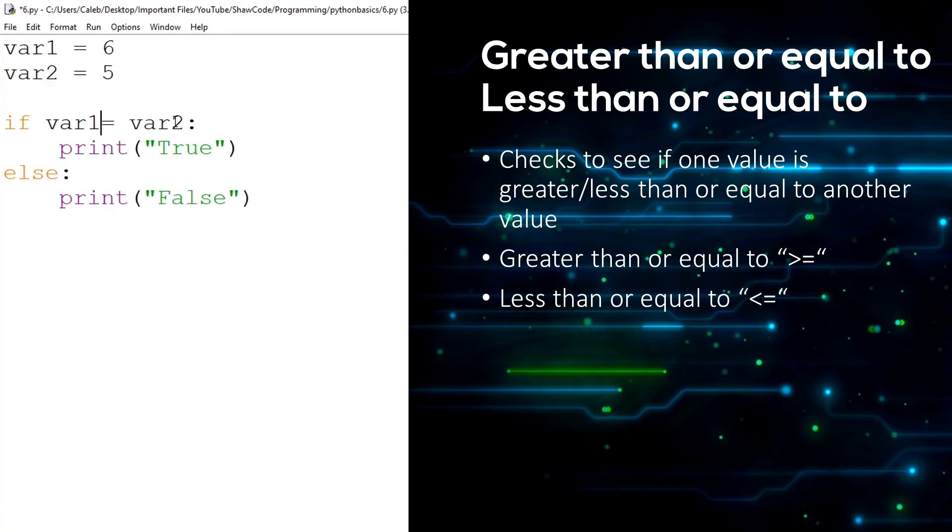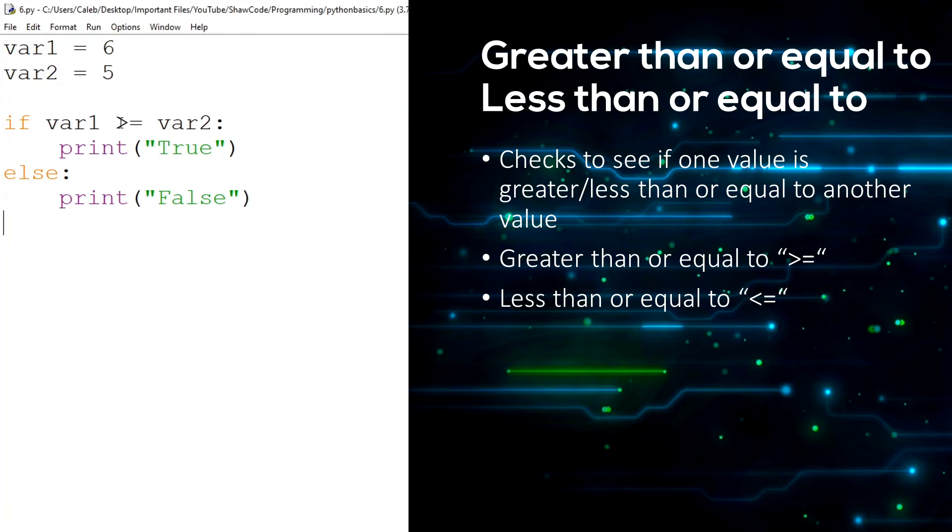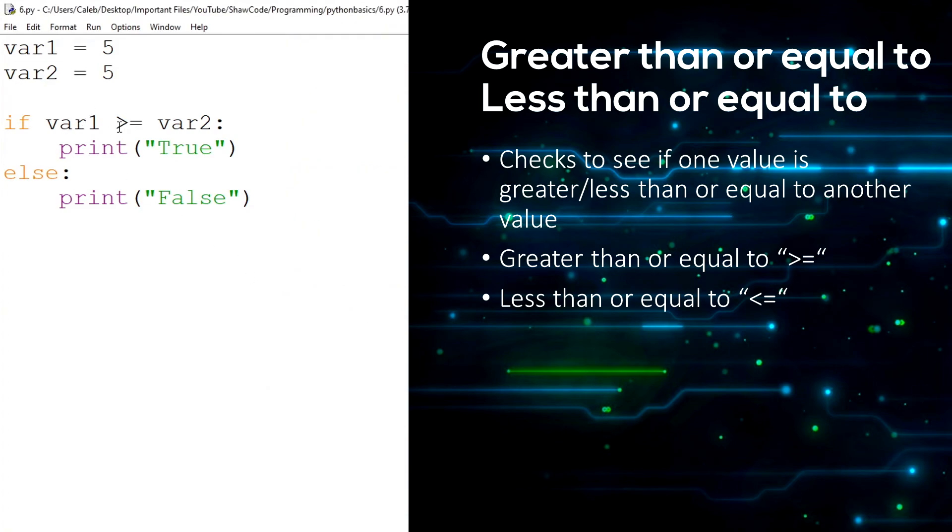Let's change this to greater than or equal to. This prints true because var1 is greater than var2. It might not be, it's not equal, but it still goes through. It still proves true because it's greater than. So if we wanted to change var1 to 5 so that they're equal, it will still print true because greater than or equal to. It basically just checks to see if one value is greater than or equal to another value, or if it's less than or equal to another value.